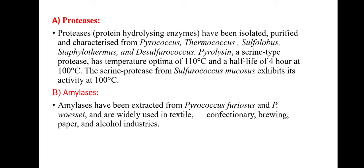The second enzyme type is amylases. Amylases have been extracted from Pyrococcus furiosus and Pyrococcus woesei and are widely used in textile, confectionery, brewing, paper, and alcohol industries.